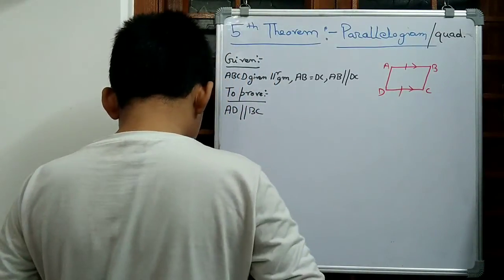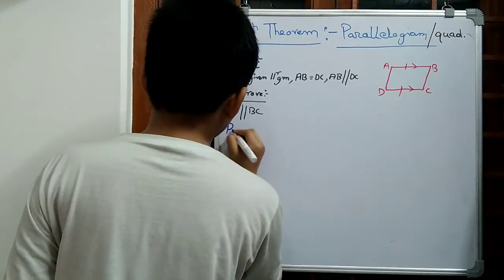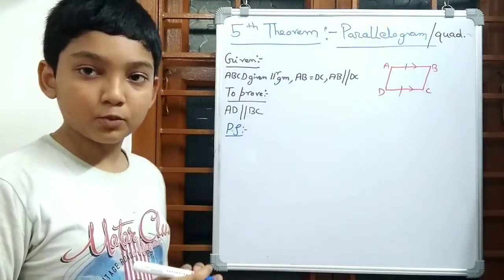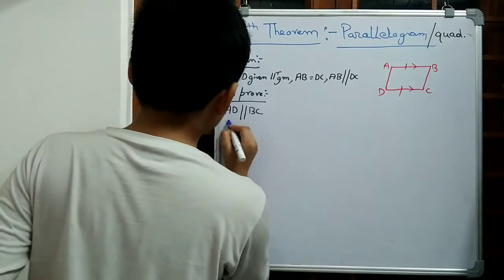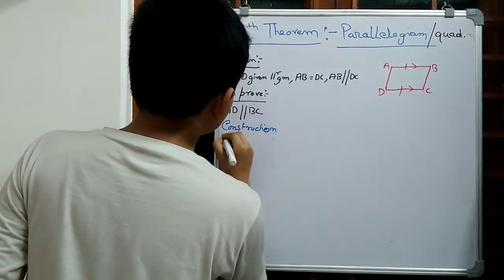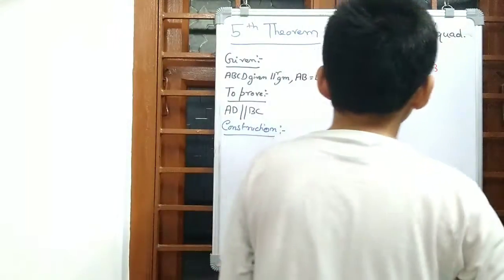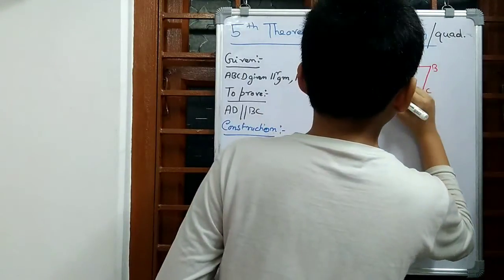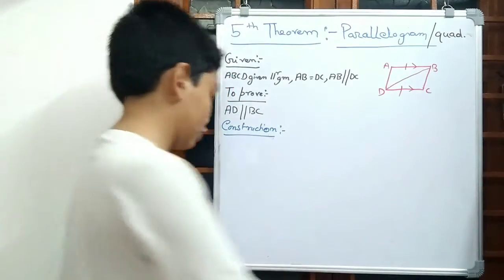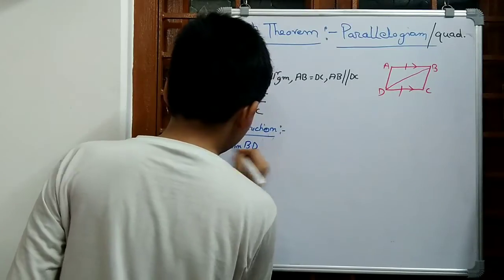So let's start our proof. Construction is required in this proof. So what is the construction? Join BD. We have to join BD, and in the construction part we write: join BD.